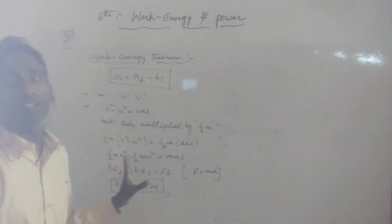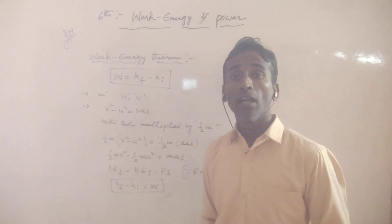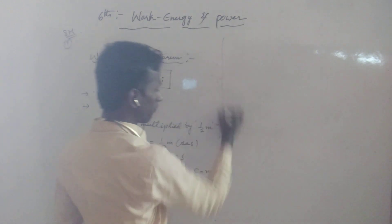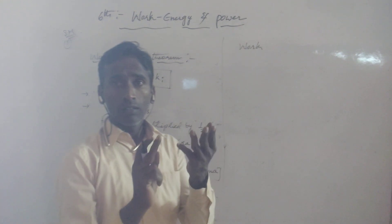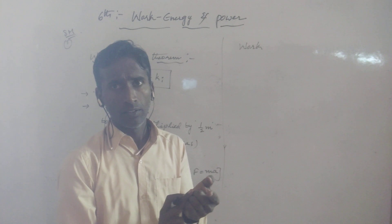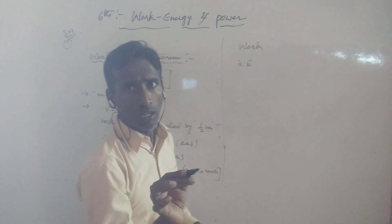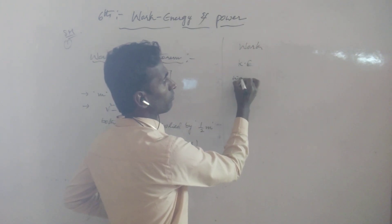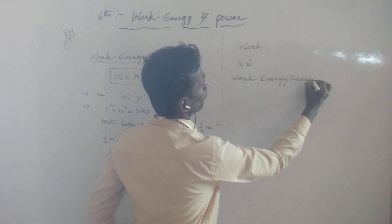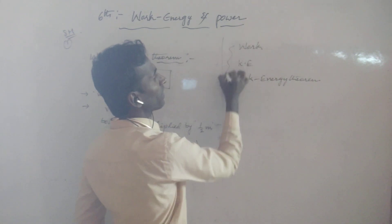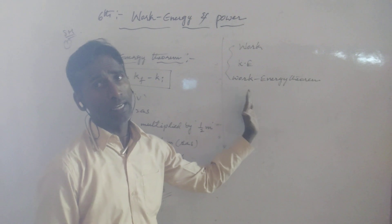Simply we can write this one. Definitely 100% you will get here full marks. First of all write the work definition, formula and units. Then kinetic energy definition and formula, and then the work-energy theorem. These three parts if you write, 100% you will get eight marks for this question.